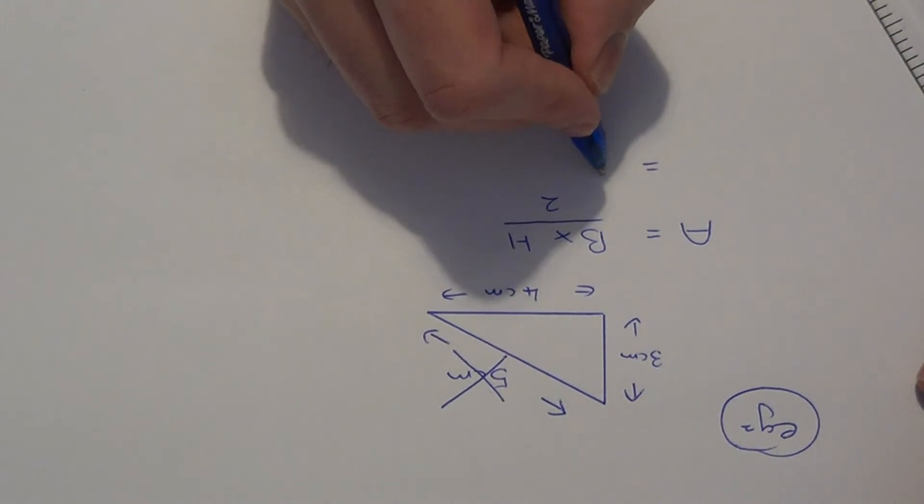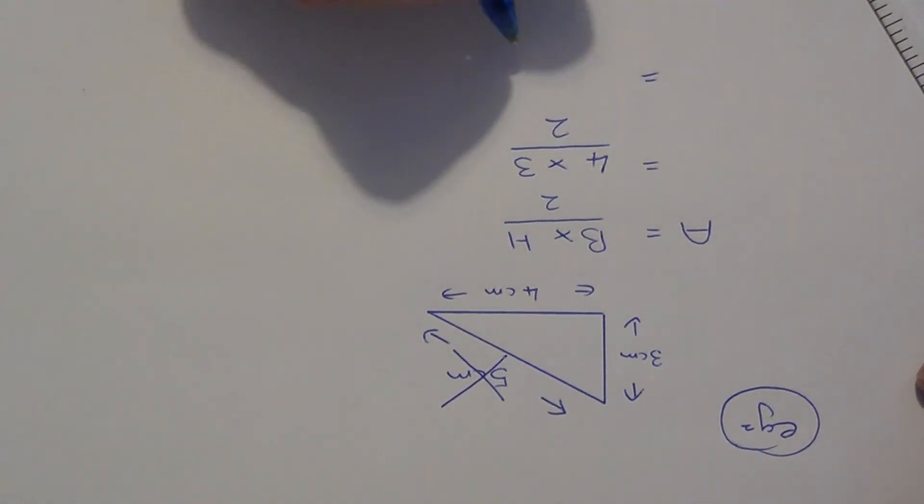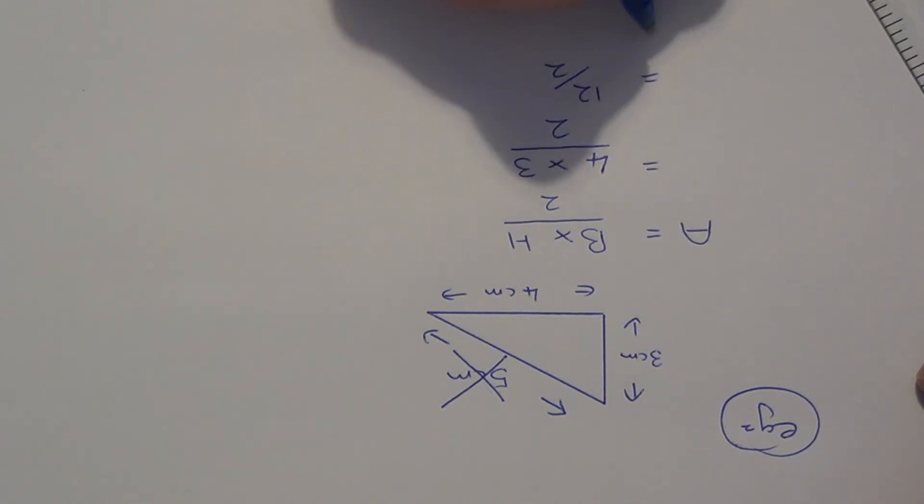So 4 times 3 divided by 2: 4 times 3 is 12, divided by 2 gives us 6. Remember to put the units at the end—since this is an area, we write centimeters squared.